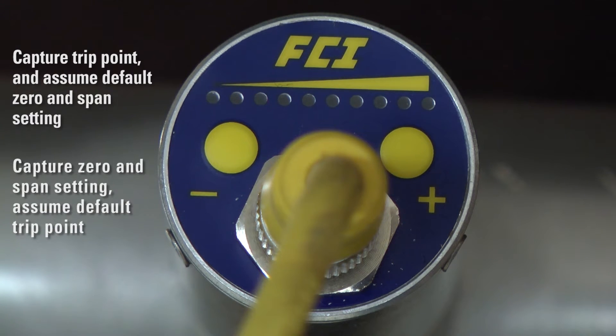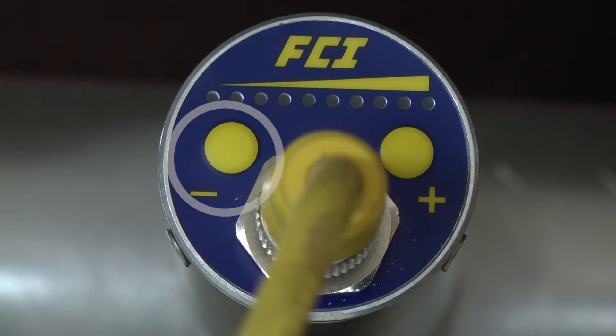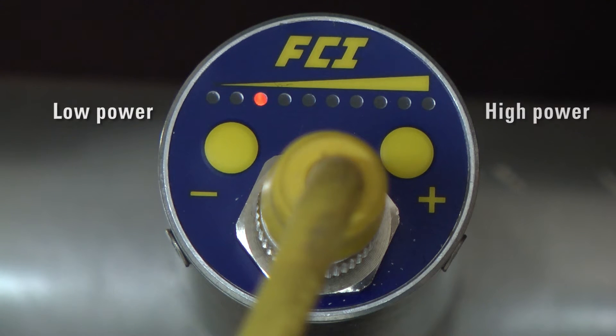In either case, entering with the minus or plus button selects the sensor excitation setting—low power or high power respectively—and exiting with the minus or plus button selects the fail safe, either low (minus button) or high (plus button).